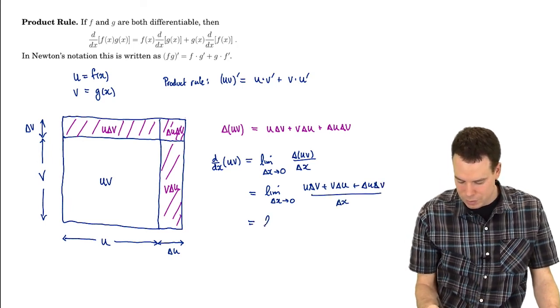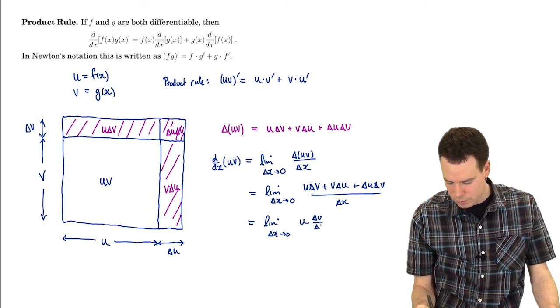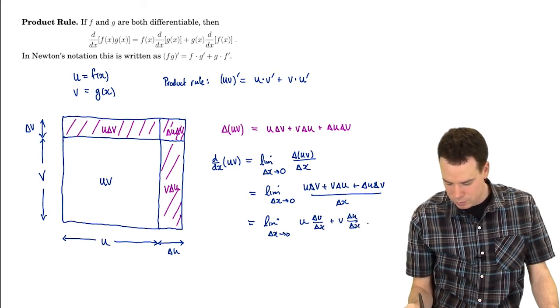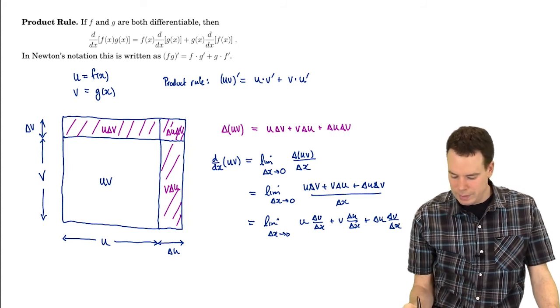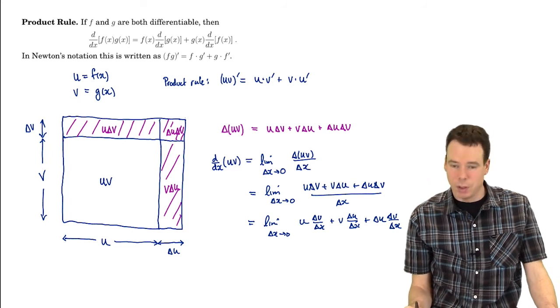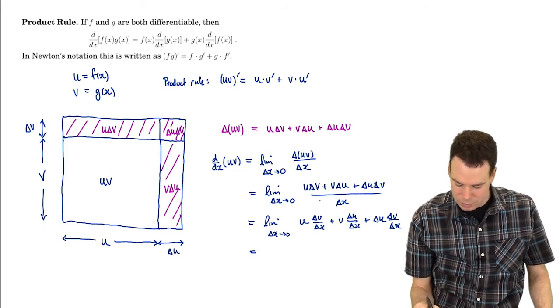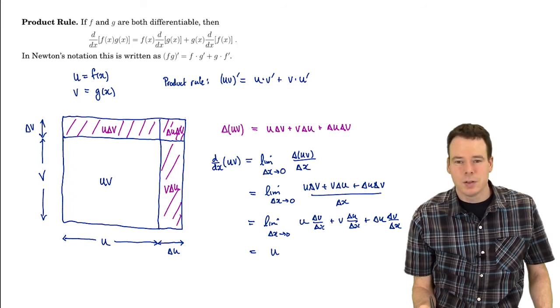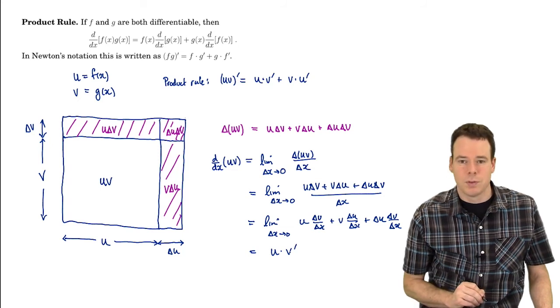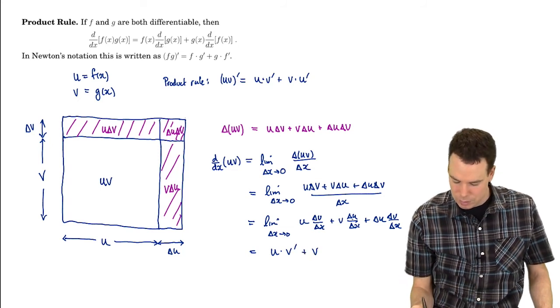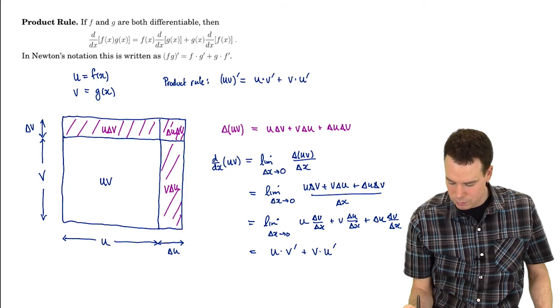Now I can divide delta x into each piece. That's u delta v over delta x plus v delta u over delta x plus delta u times delta v over delta x. It didn't matter on that last one which one I paired the delta x with. Well we have that the limit as delta x goes to 0, that first term is u times delta v over delta x as delta x goes to 0. That's just the derivative of v. What about the next piece? That was v times delta u over delta x. That's exactly the derivative of u.